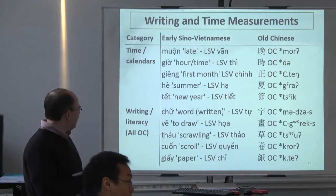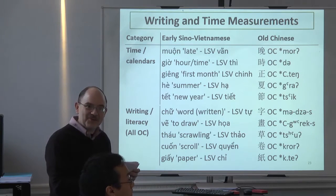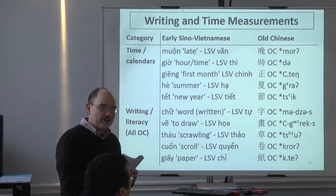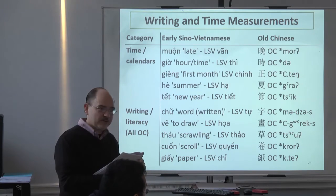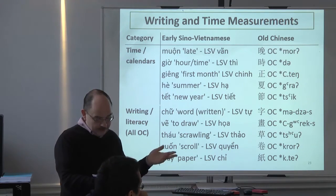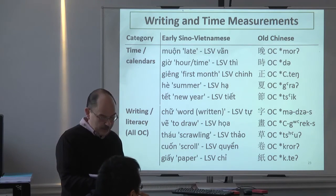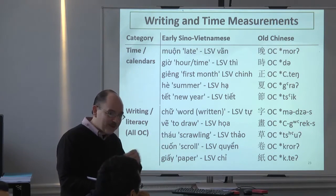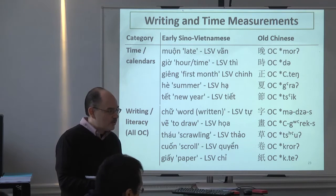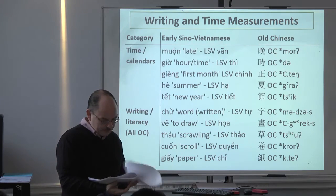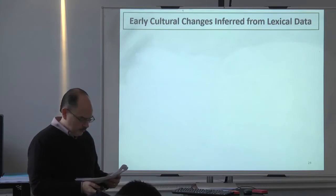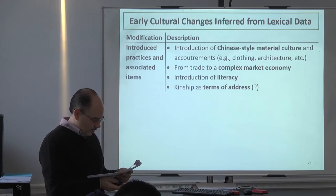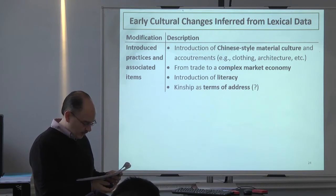To top it off, just to mention — writing, literacy, abstract concepts of time, calendars — really quite a rich range of evidence. I've got over 300 to 350 early Sino-Vietnamese terms I consider in the high-certainty category, another hundred of reduced certainty. There's enough evidence to do some tentative hypothesizing. To summarize the kind of changes here — historical ethnosemantics, really, that's what I've been doing. A number of dimensions have been introduced.